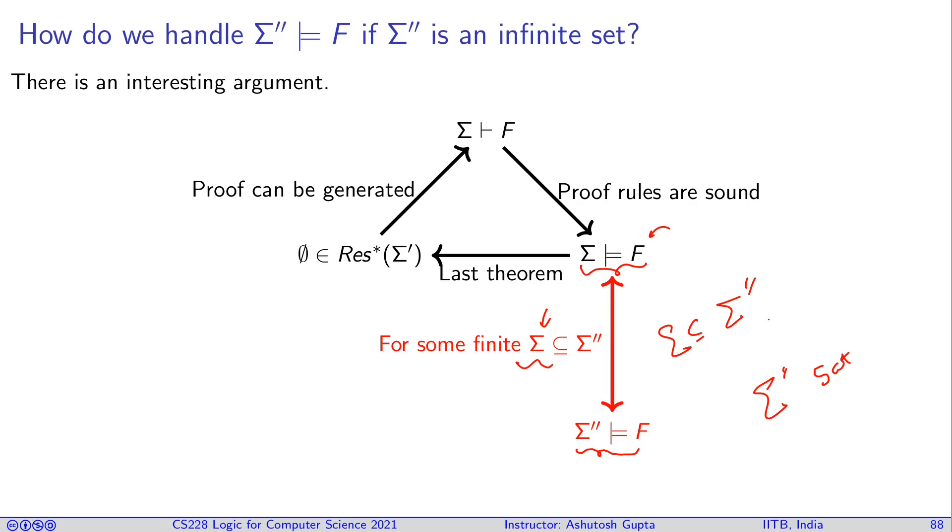How is this going to be useful here? What you will do is that you take a Σ'', take a union with not of F. Now you will show that if all the subsets of this are sat, then this guy has to be sat. And therefore, this implication does not hold. So that means there must be some finite subset Σ for which this Σ is unsat and that Σ is going to be used here.